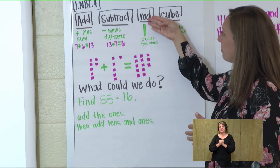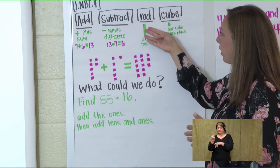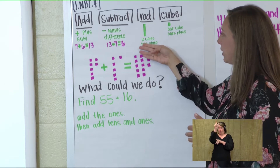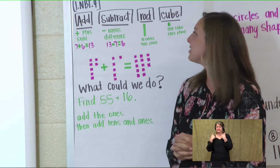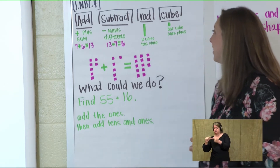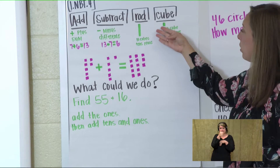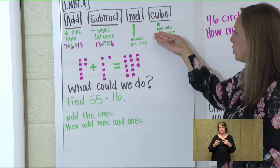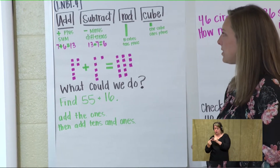We also have our rod. One rod is ten cubes and it holds the tens place. And then we have our cube. A cube is just one and it holds the ones place.